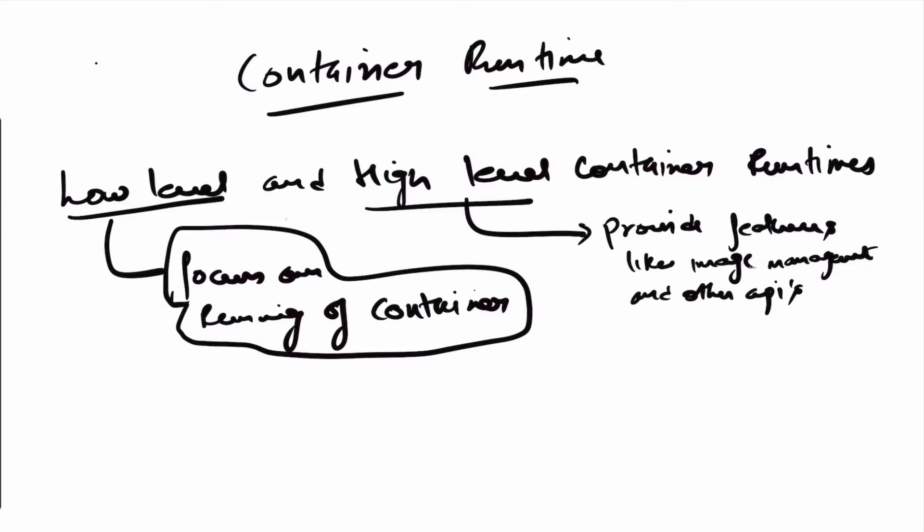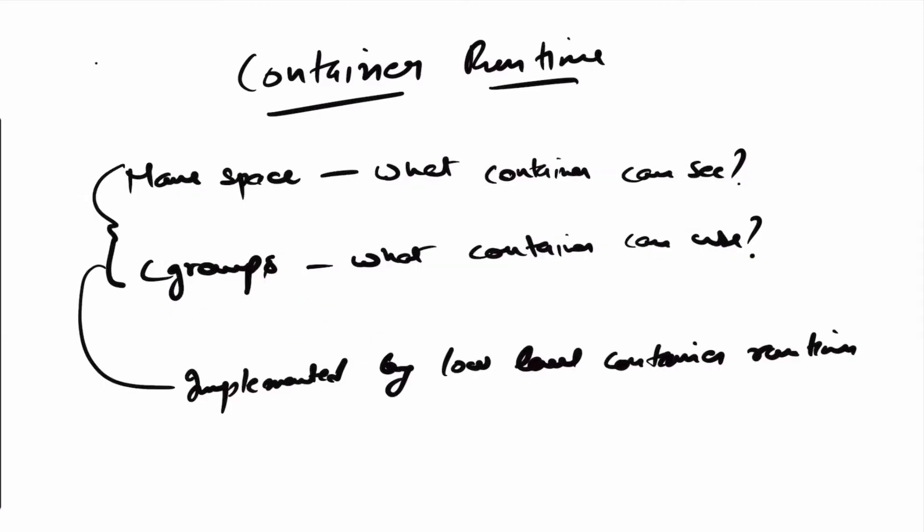A container is nothing but a combination of namespaces and cgroups. Namespaces define what a container can see, or what a process can see. Cgroups define what it can use, what resources it has access to.